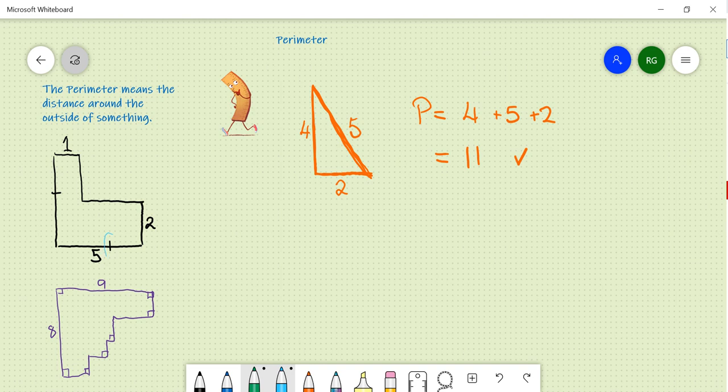You will notice this little symbol here, and this little symbol here, actually mean that those sides are the same. That means the left-hand side is actually five meters as well. Now I can start adding up the perimeter is equal to five from the bottom, plus five from the left-hand side.